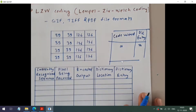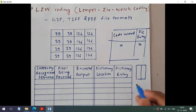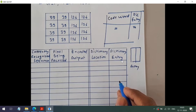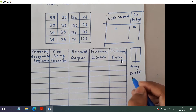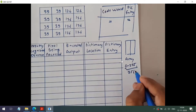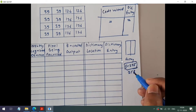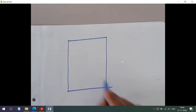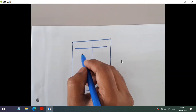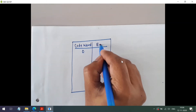In LZW coding, the first entries will be occupied by our original intensity levels. For a grey image, how many intensity levels will there be? From 0 to 255, so we have a total of 256 intensity levels. The initial 256 entries in the dictionary will be occupied by these intensity levels. Let me draw the dictionary here. Initially for the grey image, in the dictionary we will have a total of 256 entries, with codeword and entry columns.